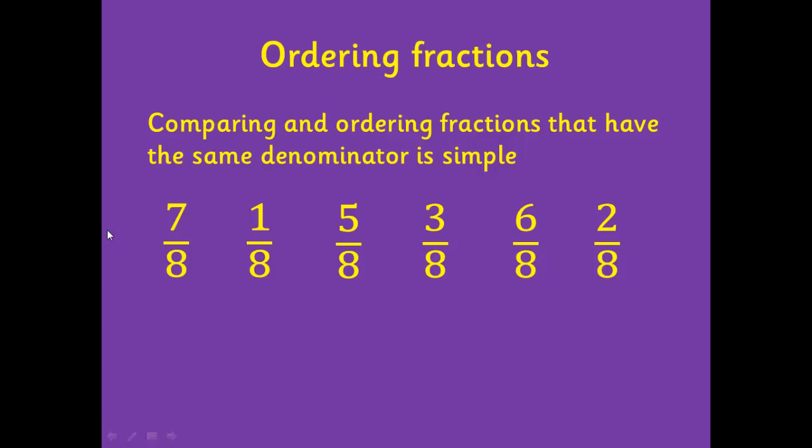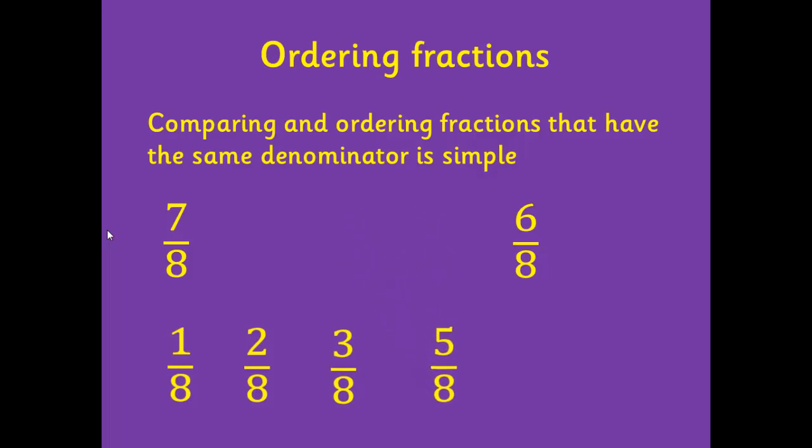We can see here that 1 eighth is the smallest, followed by 2 eighths. The next largest is 3 eighths, the next is 5 eighths, the next largest is 6 eighths, and the largest fraction is 7 eighths. So ordering fractions with the same denominator is very simple.